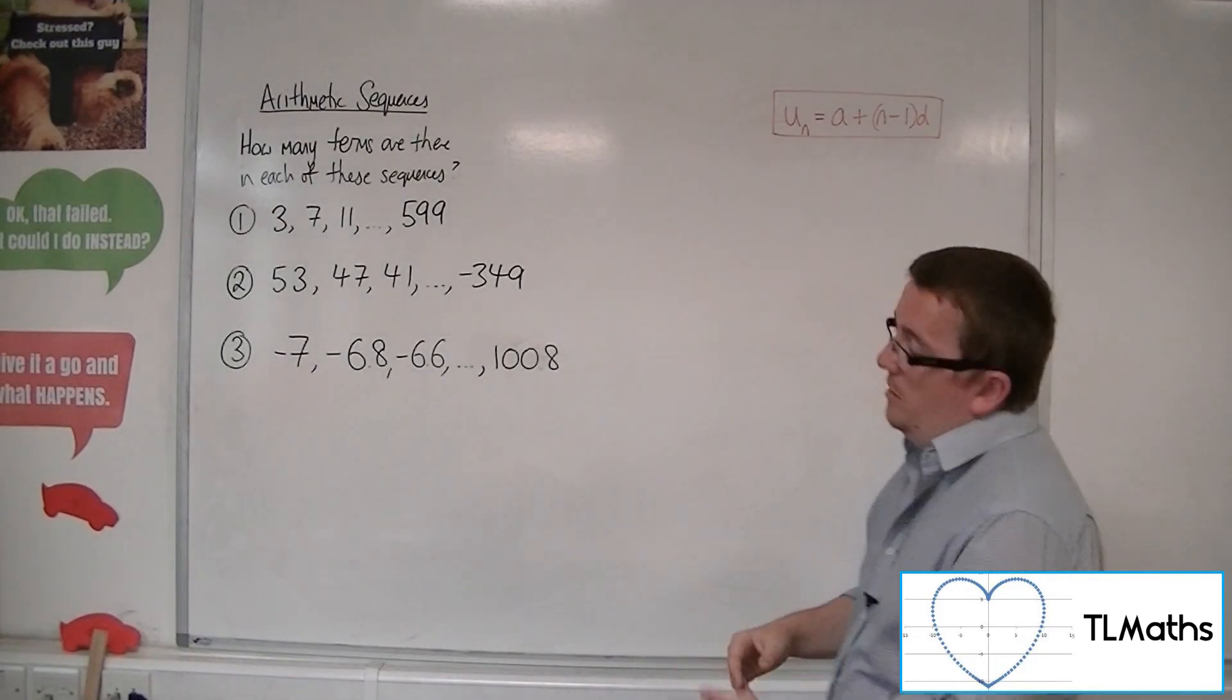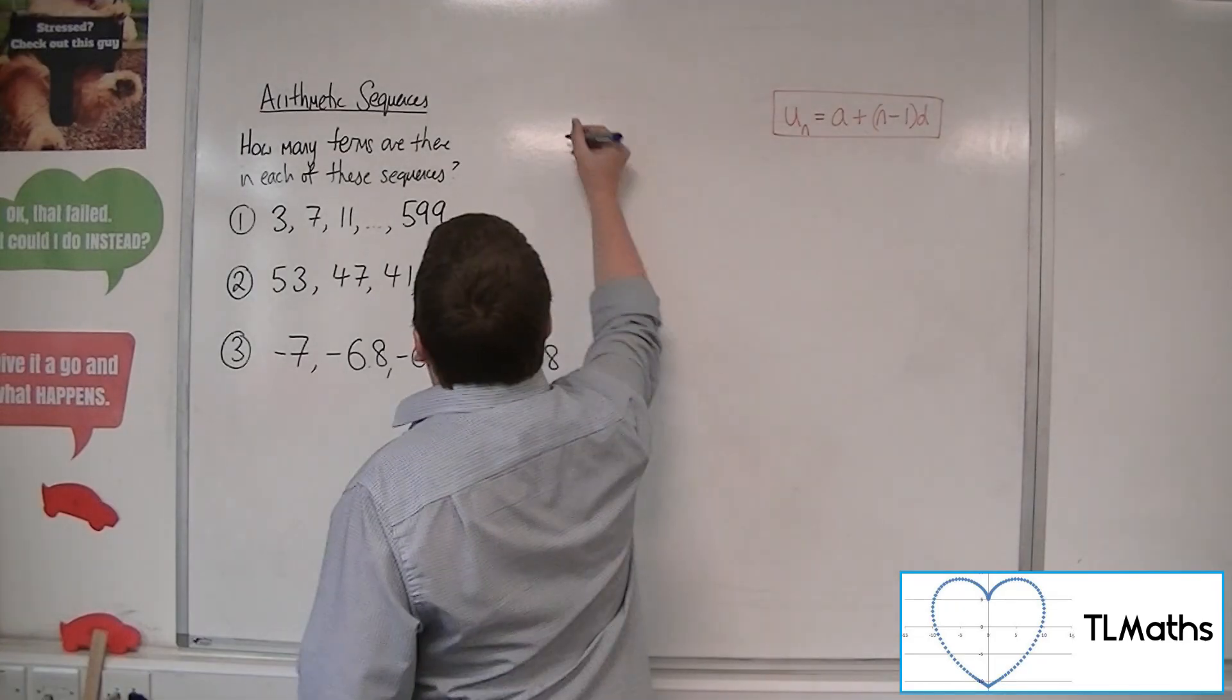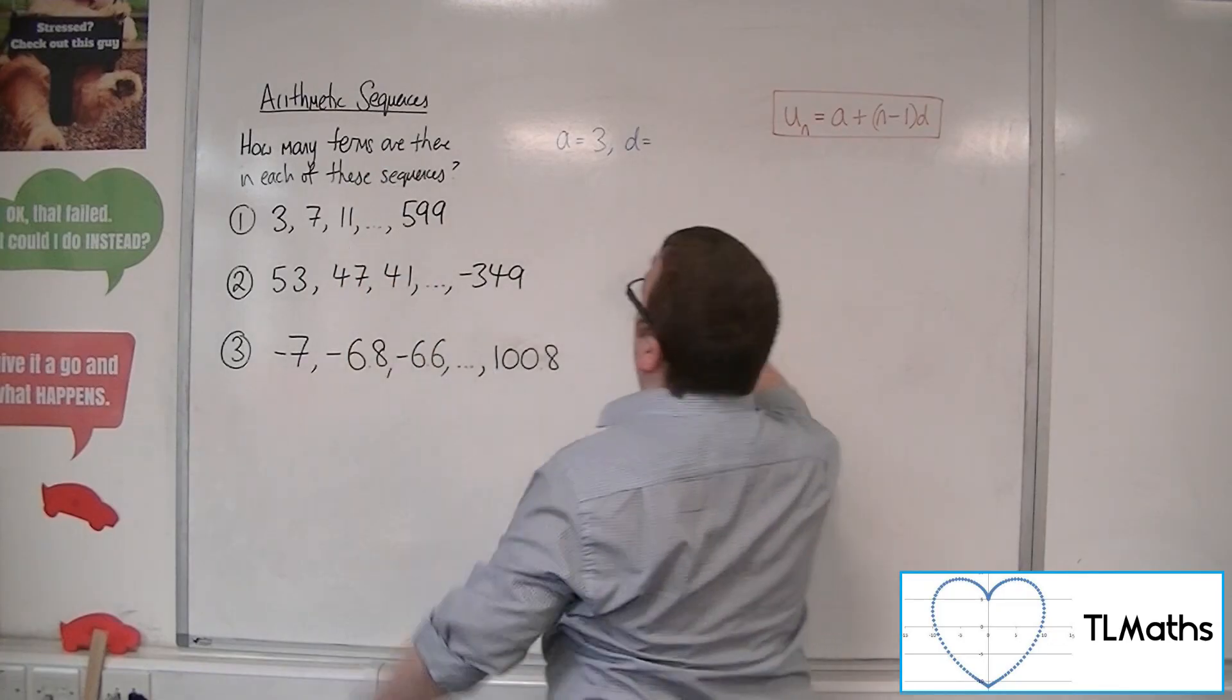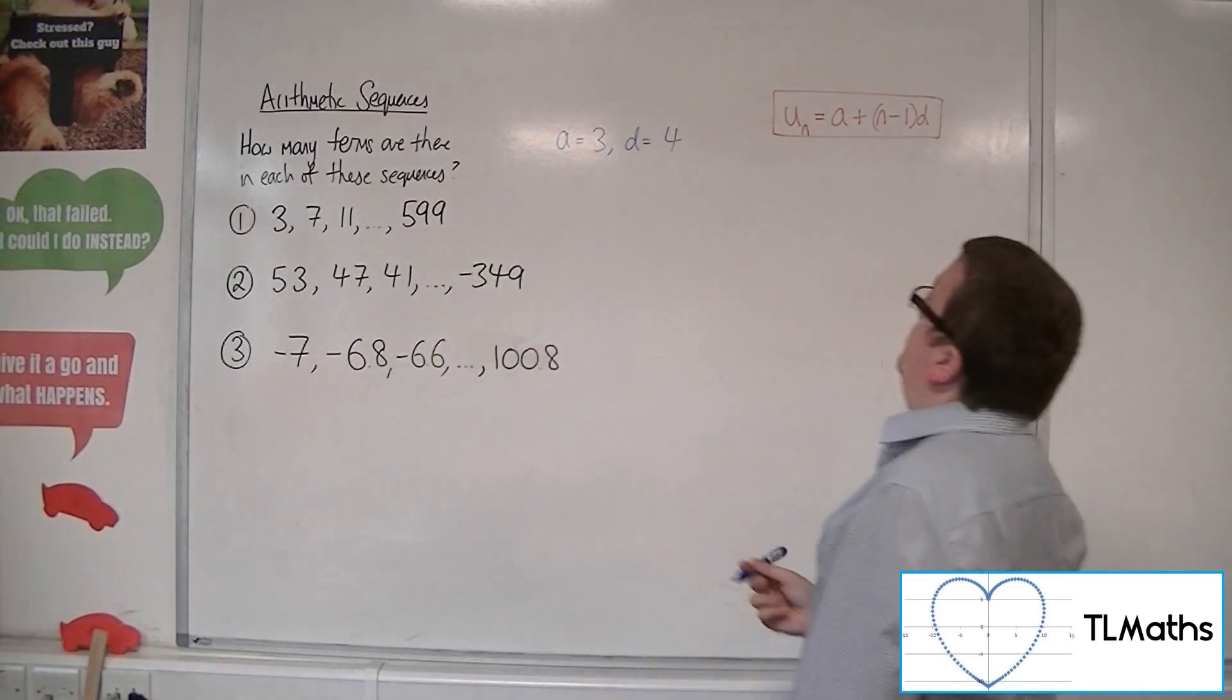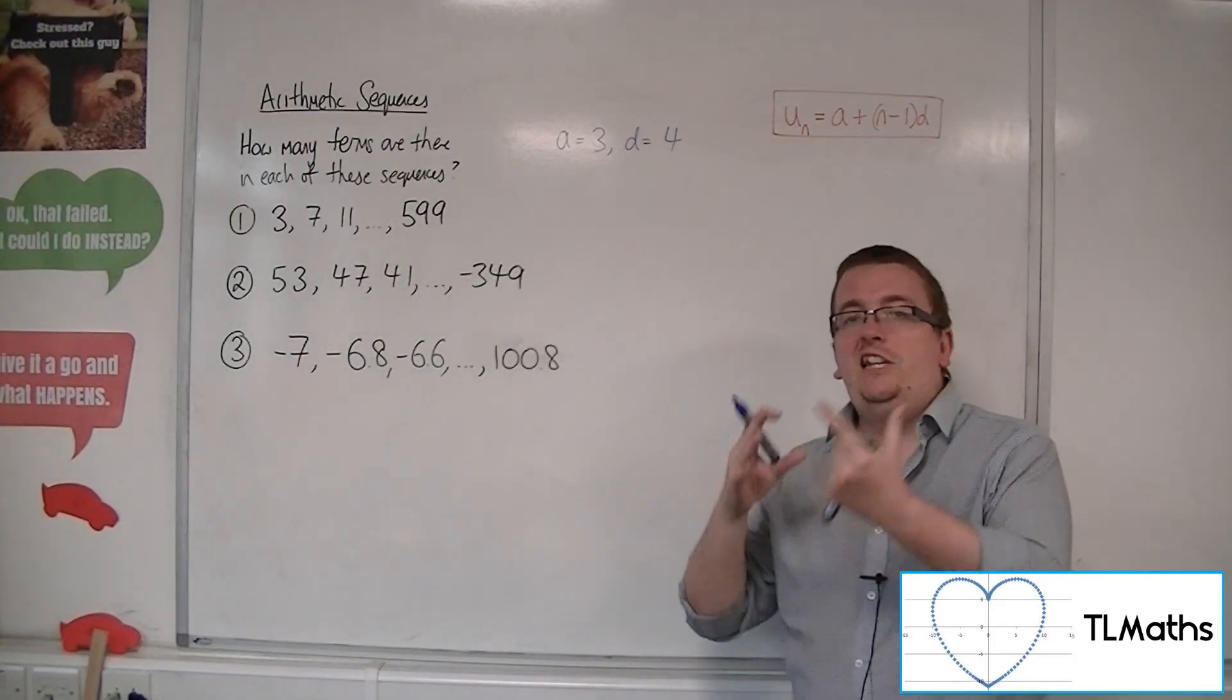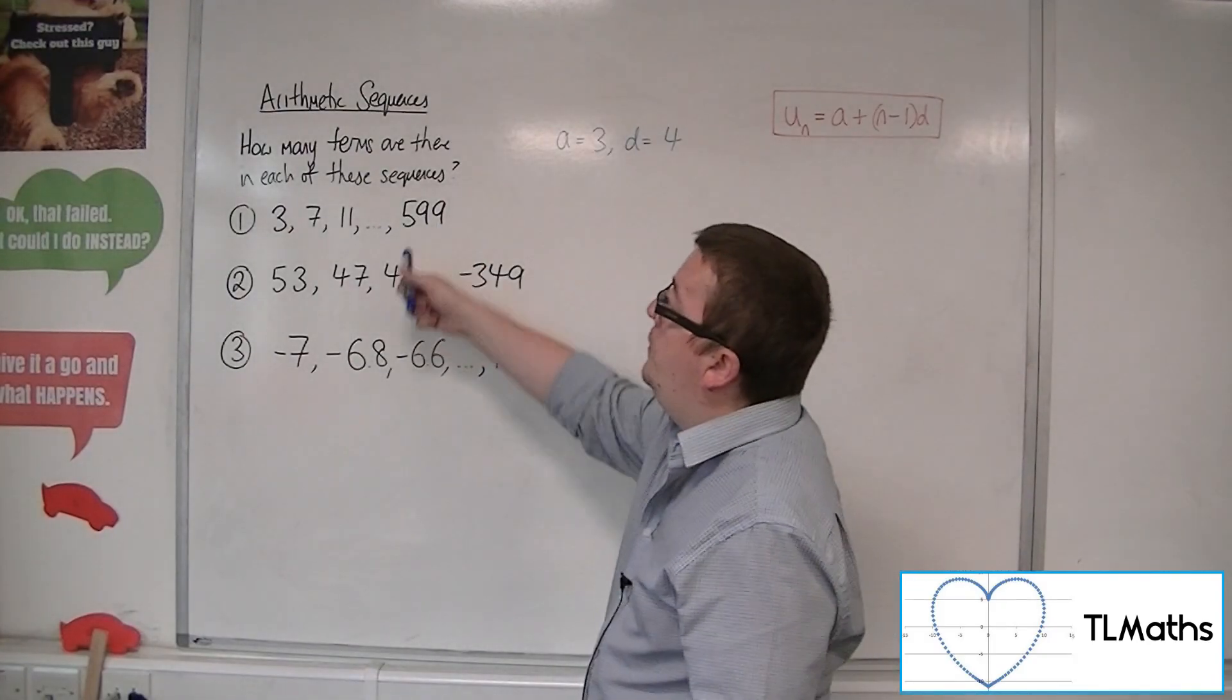So for this first example, we have that the first term is 3, and the common difference is 4, because we're going up in 4s. So I want to know which value of n will give me 599.